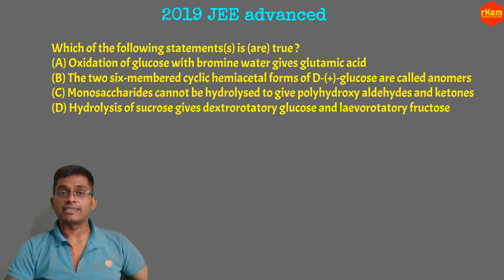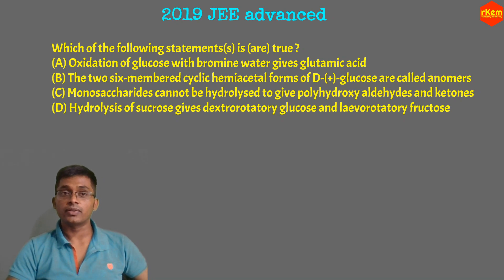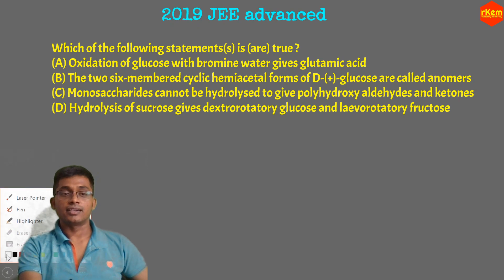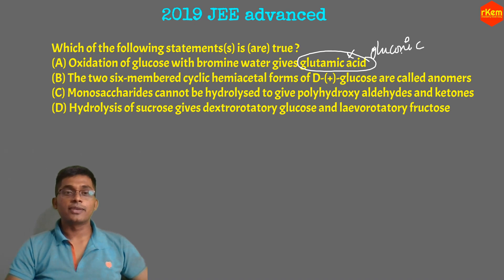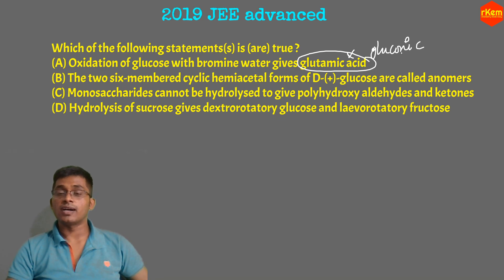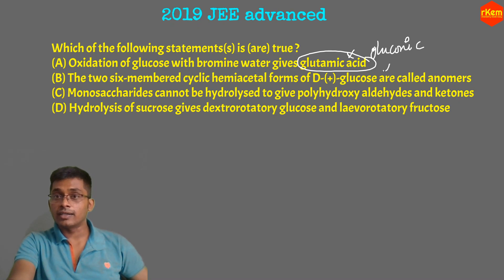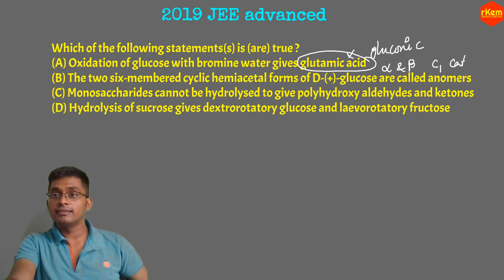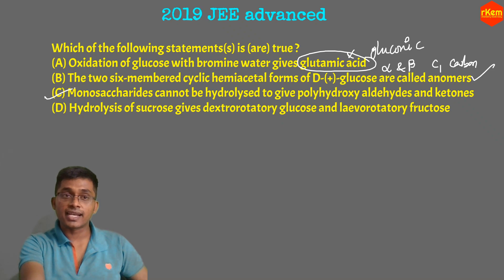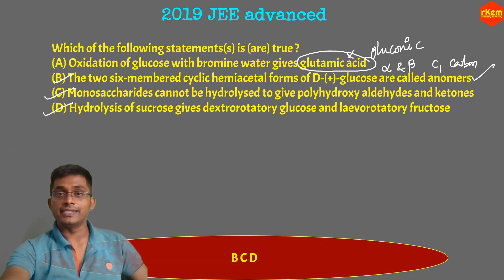Let me show you proof with year-wise questions. 2019 JEE Advanced: 'Which of the following statements is true?' Statement one — oxidation of glucose with bromine water gives glutamic acid — no, it must give gluconic acid. Next — two 6-membered rings of cyclic hemiacetal forms of glucose — those are alpha and beta glucose, anomers differing at C1 carbon — correct. Monosaccharides cannot be hydrolyzed — direct NCERT statement. Hydrolysis of sucrose — also direct NCERT. So the answer is B and C/D — direct NCERT statements.